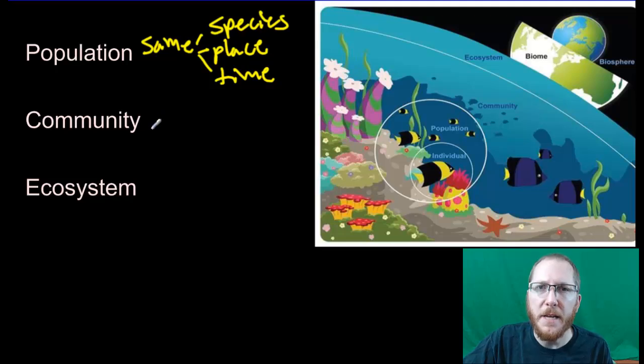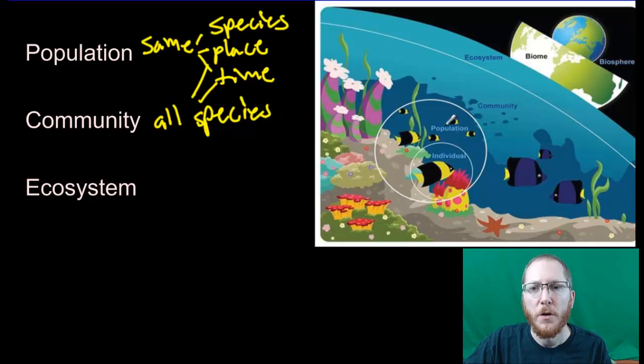From there, we can go to a community, which is going to be still the same place, same time. The only difference is this one's going to be all the species that are in the same place at the same time. This would include all the other types of fish, the plants, invertebrates like starfish and shrimp. All of those things that are alive in that same place at the same time are called the community. Sometimes they'll call it the biological community. If you hear that, it's the same thing.